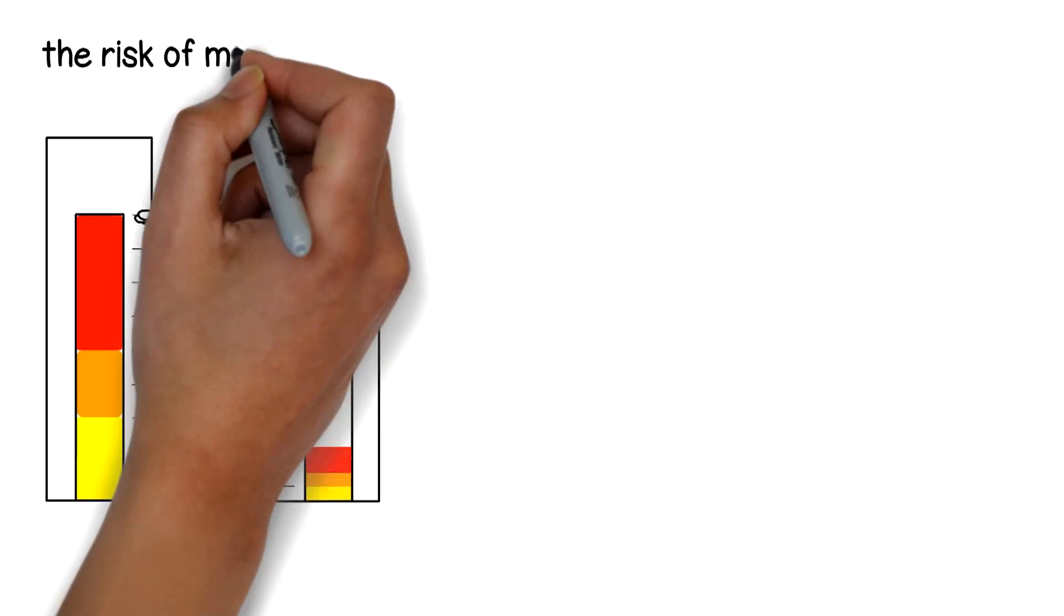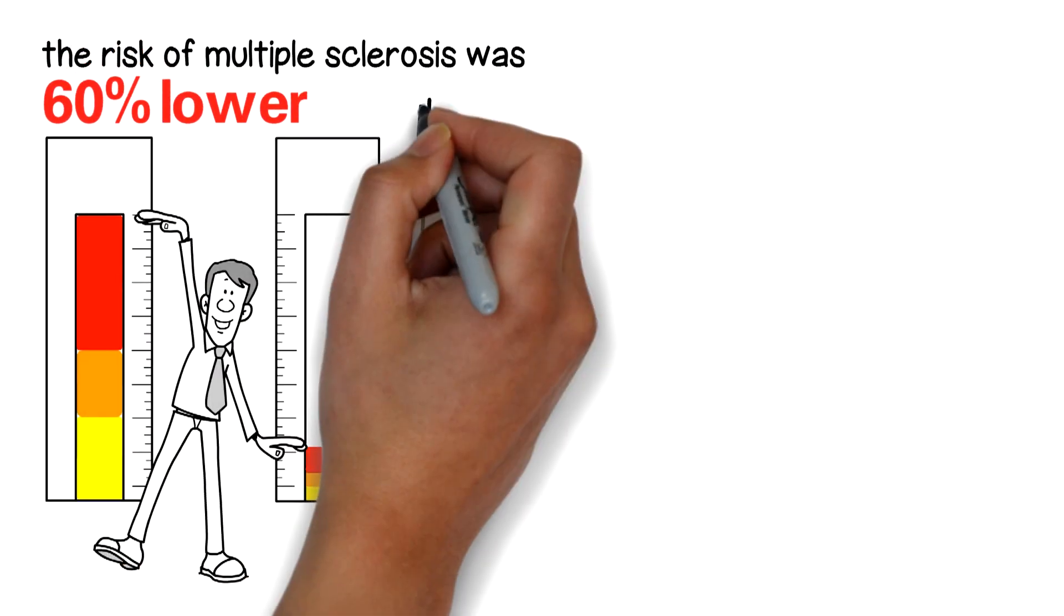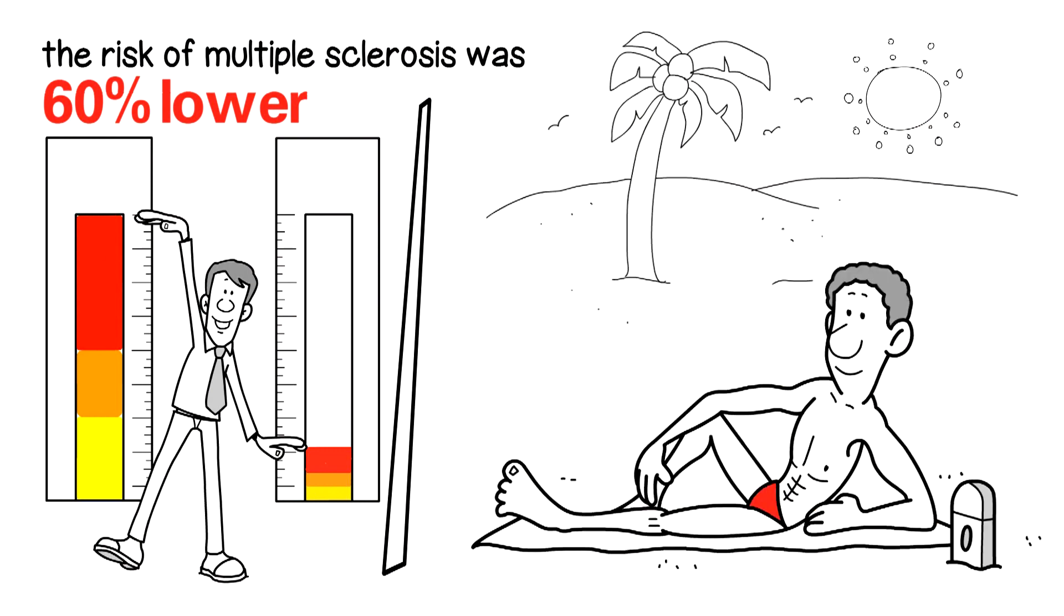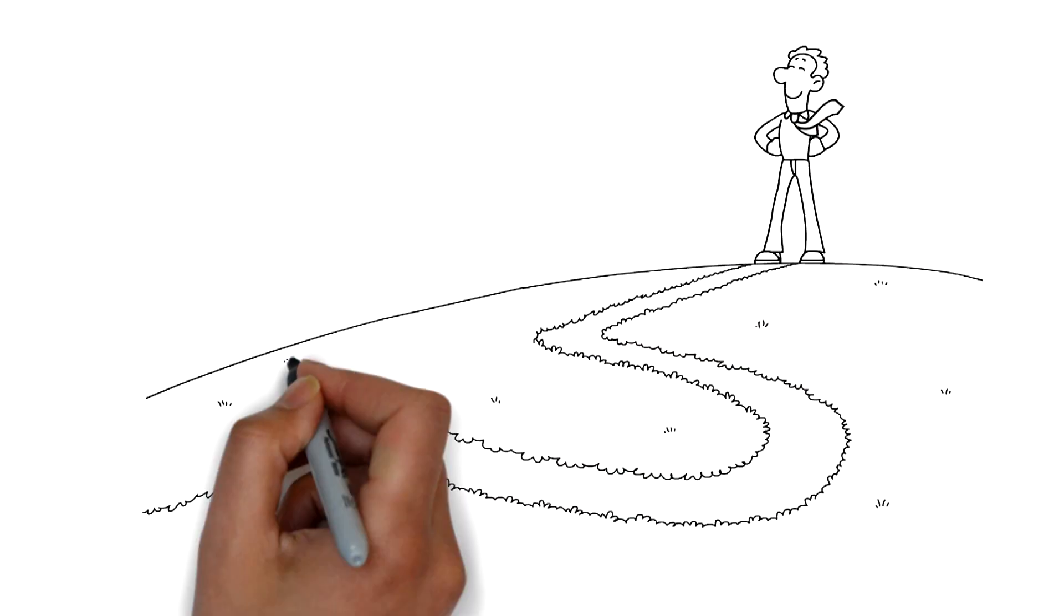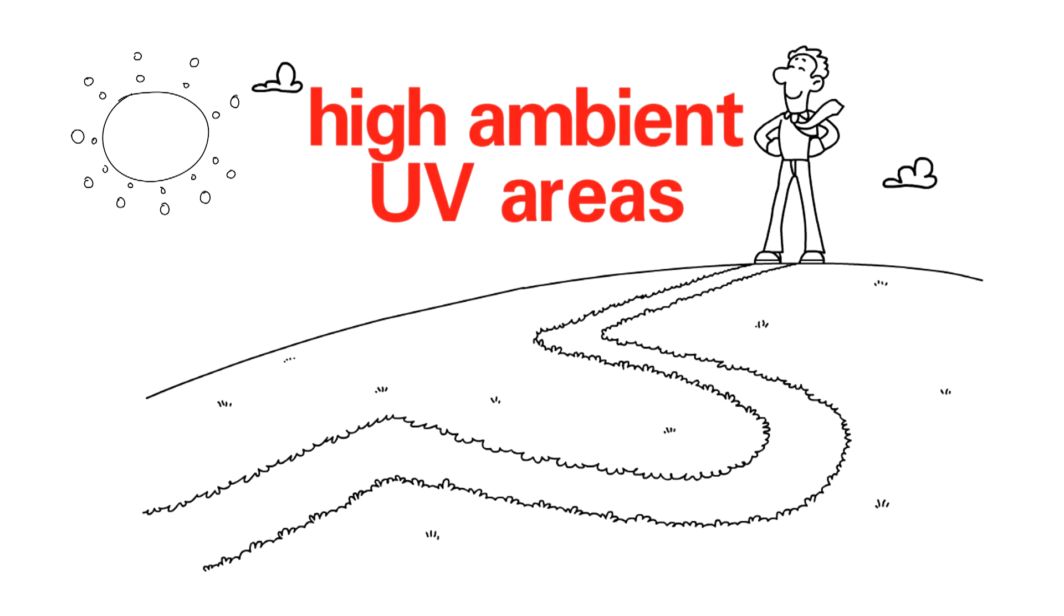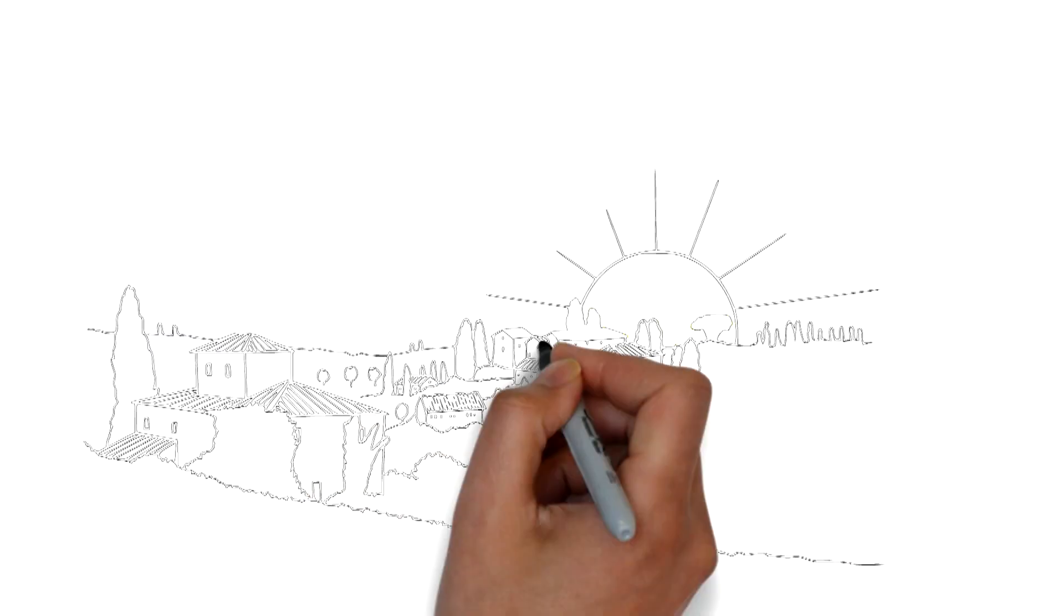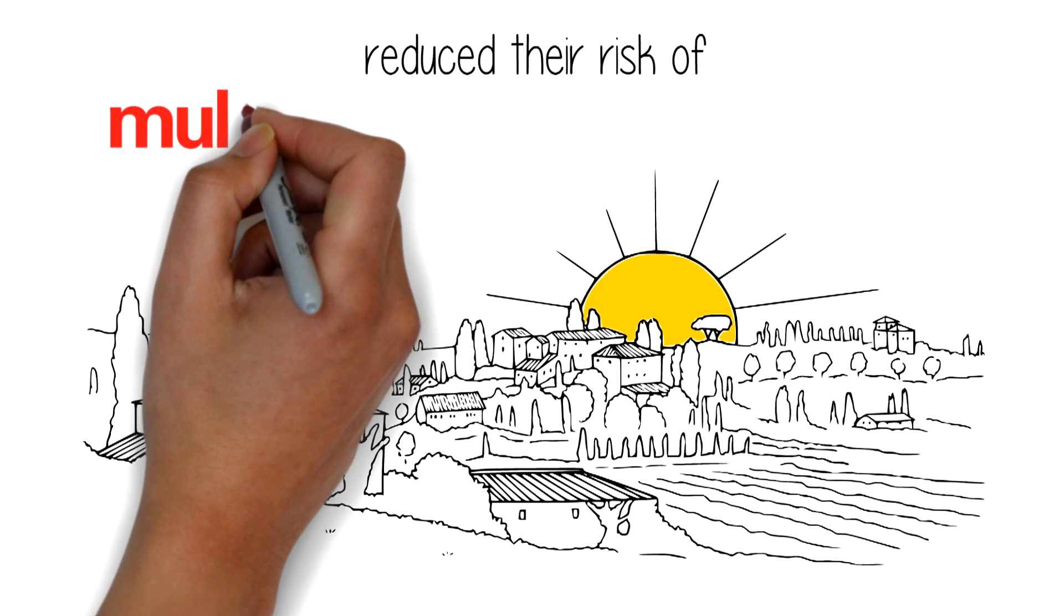A study of twins found the risk of multiple sclerosis was 60% lower for the twin who spent more time sun tanning. A further study showed people living in high ambient UV areas who spent more time outdoors during the summer reduced their risk of multiple sclerosis by 55%.